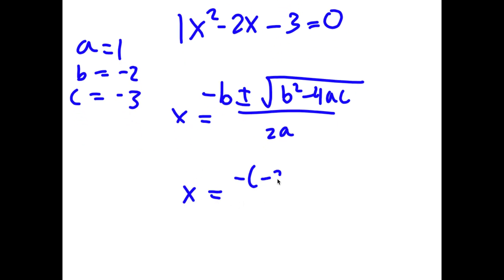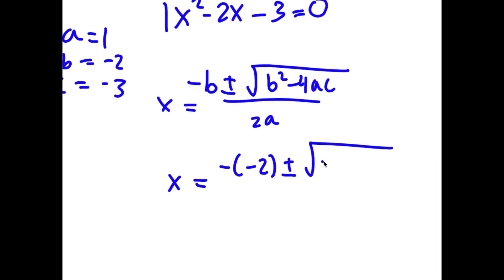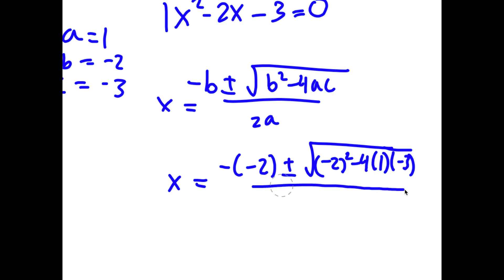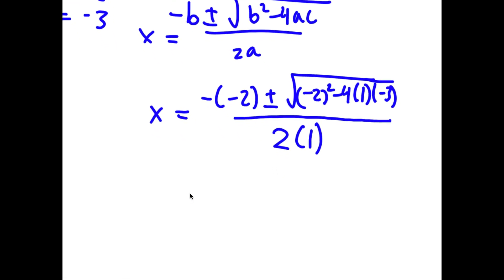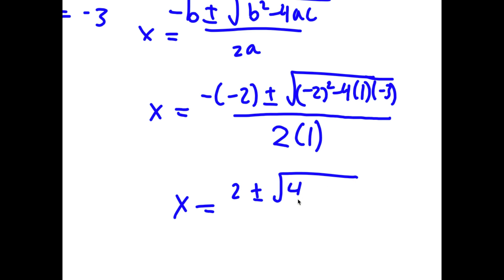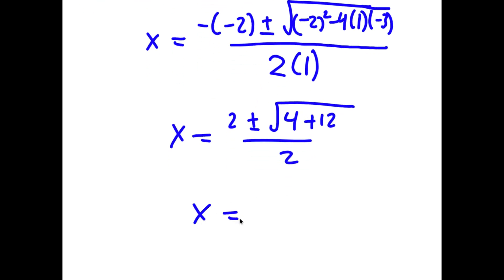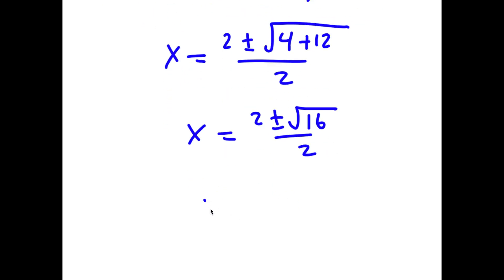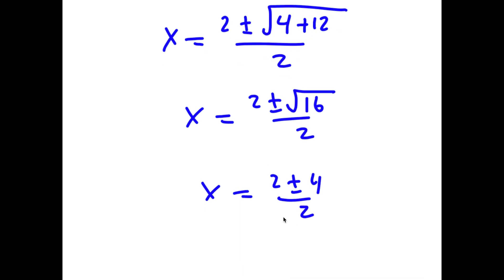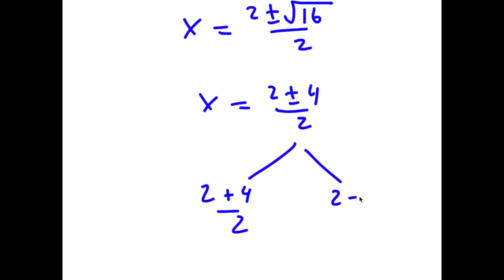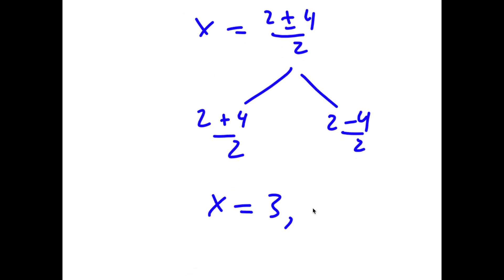So I have x is equal to negative of negative 2 plus or minus the square root of negative 2 squared minus 4 times 1 times negative 3, all over 2 times 1. This equals 2 plus or minus the square root of 4 plus 12 over 2, which is 2 plus or minus the square root of 16 over 2, which is 2 plus or minus 4 over 2. So x is equal to 3 or negative 1.